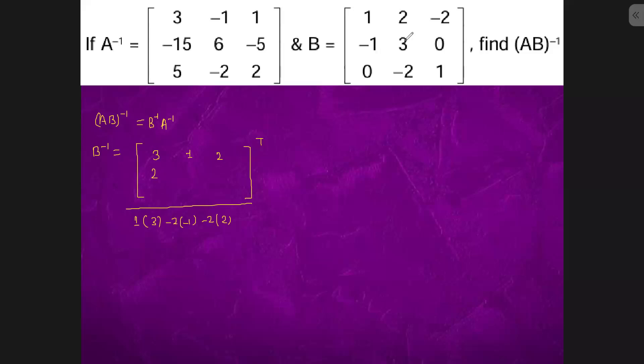Cofactor of 3 is 1. Cofactor of 0 is minus 2. So minus of minus 2 is 2. Cofactor of 0 is 6.